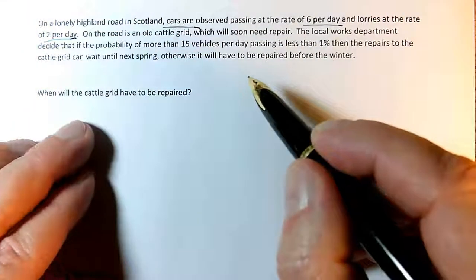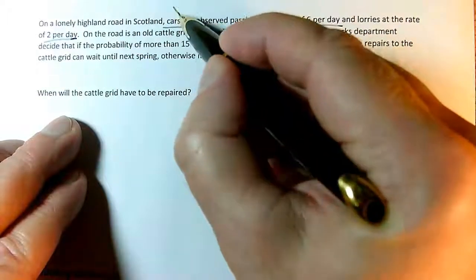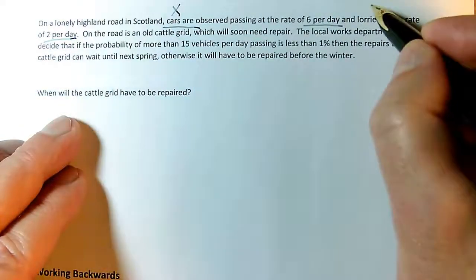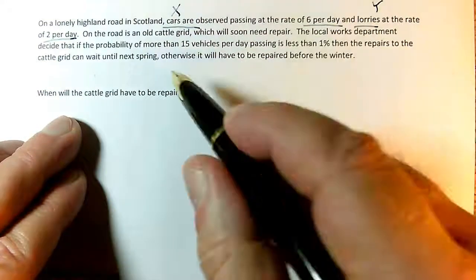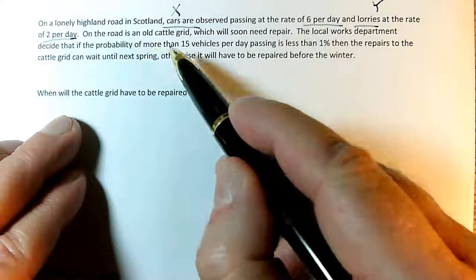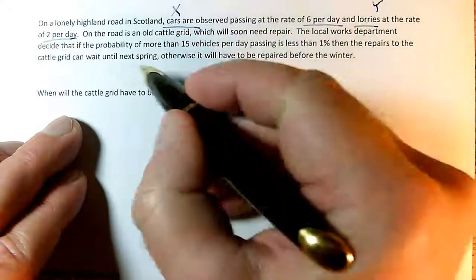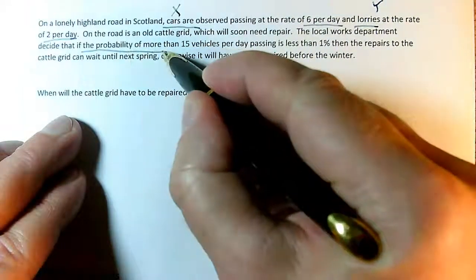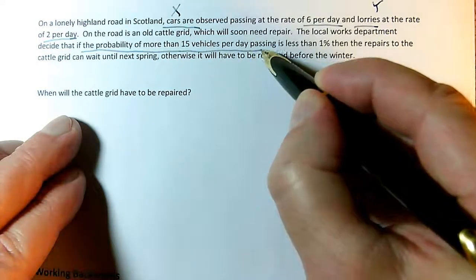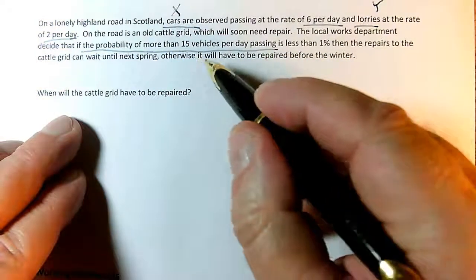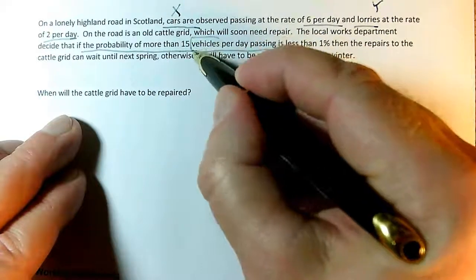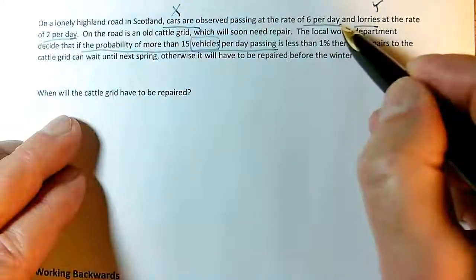It looks like we've got two different Poisson distributions. The number of cars is X, and the number of lorries is Y. On the road is an old cattle grid which will need repair. The local works department decides - I've got a given probability of more than 15 vehicles per day passing. There's a target number of vehicles, and these vehicles must mean cars plus lorries.